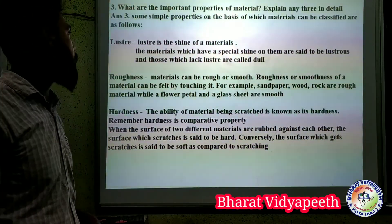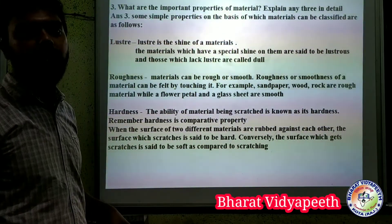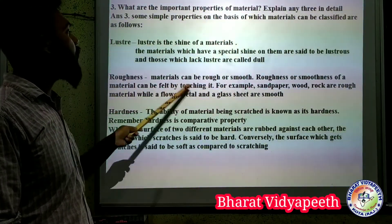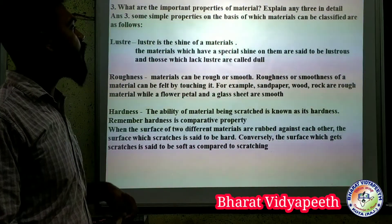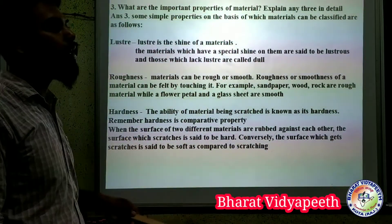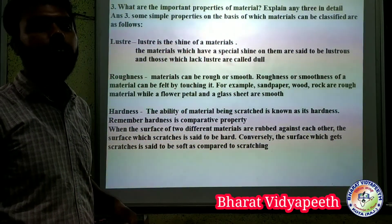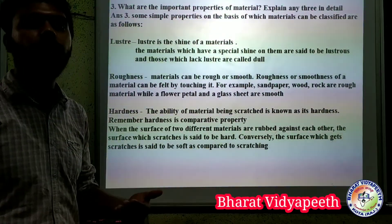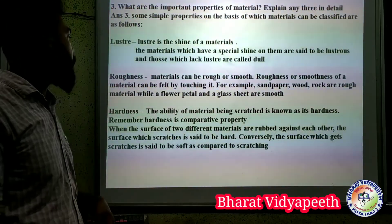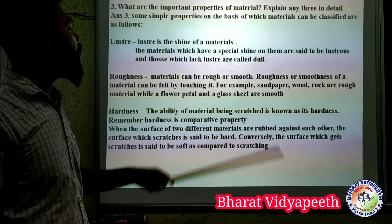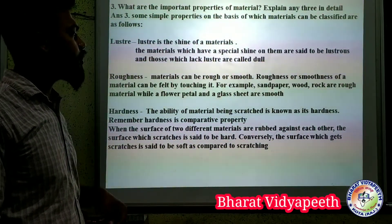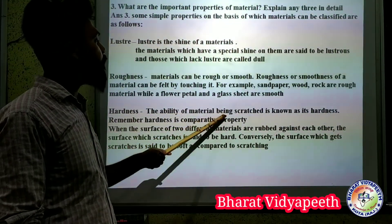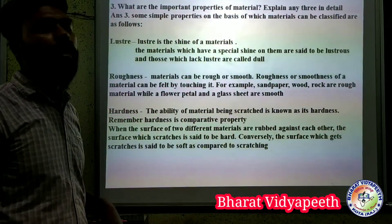Hardness and roughness are also properties of materials. Roughness and smoothness describe how we feel the surface when we touch it — whether the surface is rough or smooth. Hardness is the ability of a material to resist being scratched or stressed.